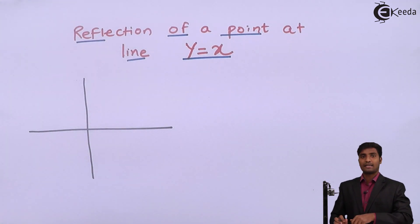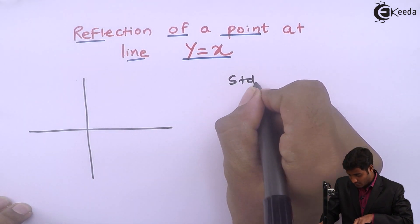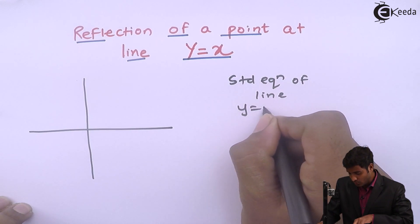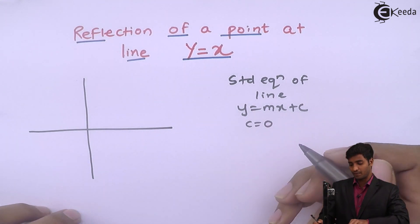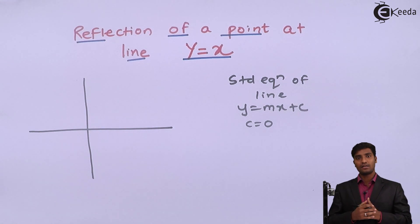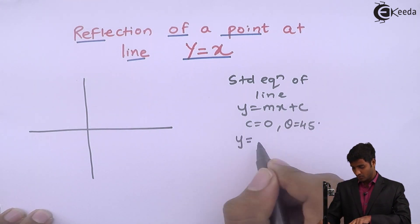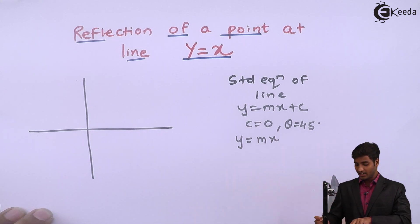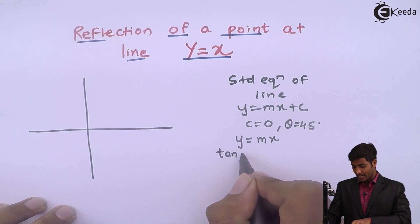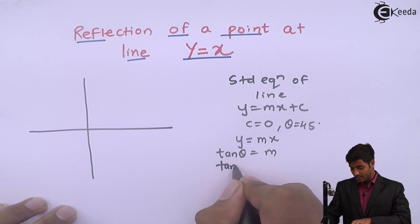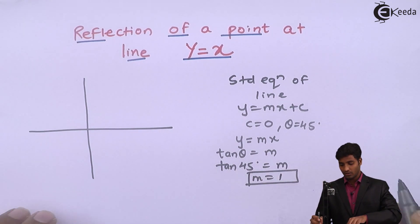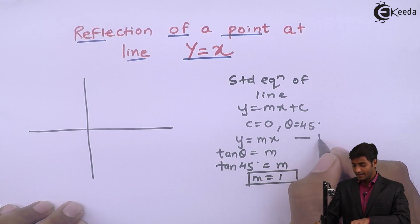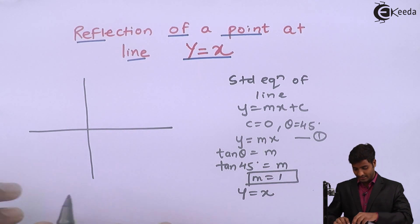We know that the standard equation of a line is y is equal to mx plus c. Since it is passing through the origin, we take c as 0, and the line is at an angle theta equal to 45 degrees. So y is equal to mx. We know that tan theta equals m, and here theta is 45 degrees, which means the value of m is 1. So after inserting the value, I get y is equal to x. This is that line.